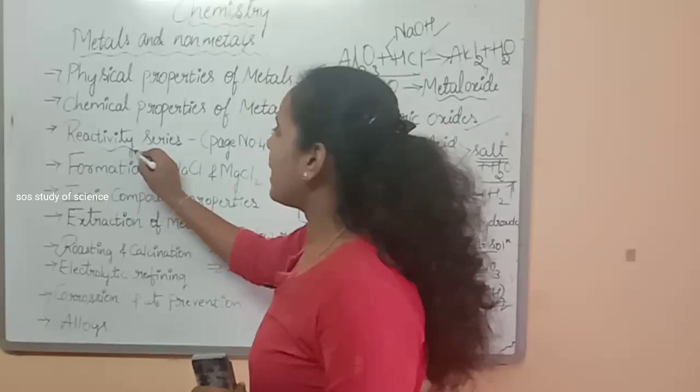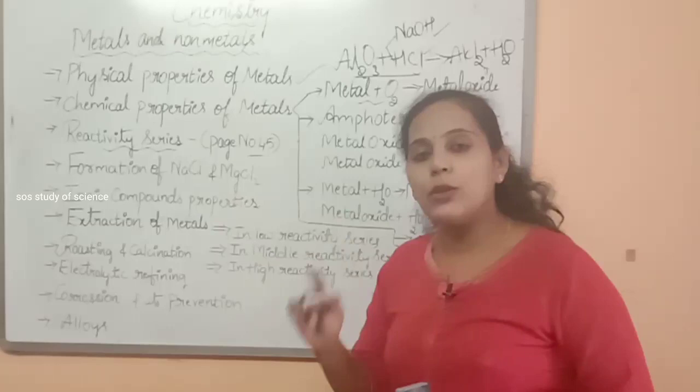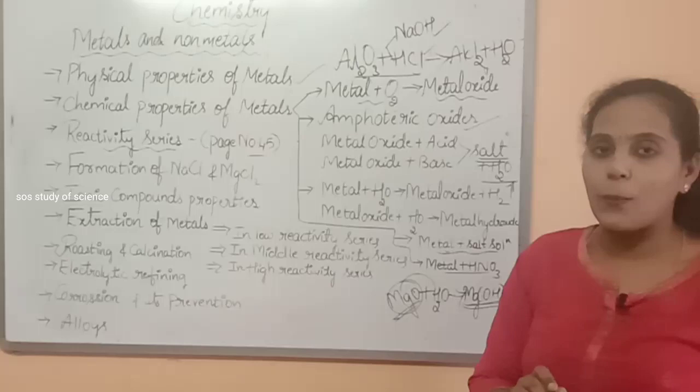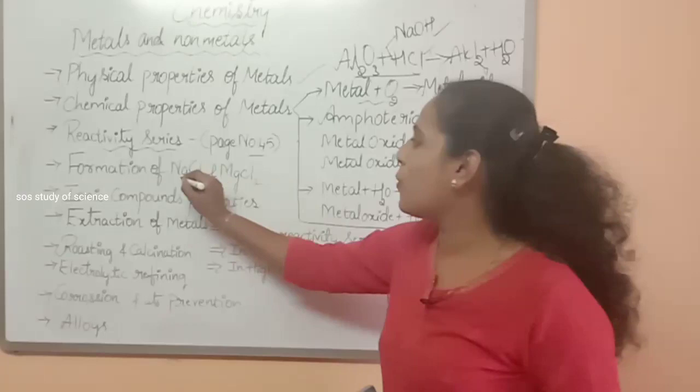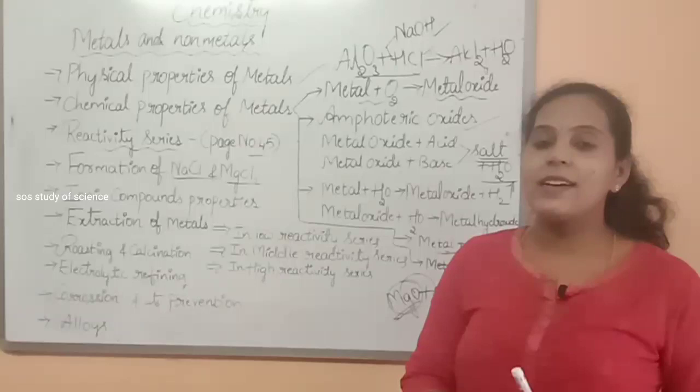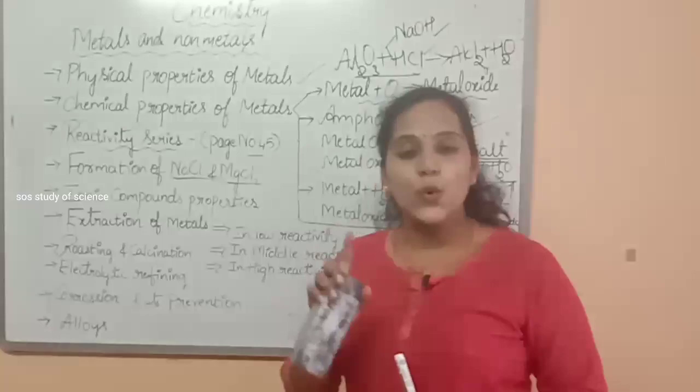Moving on, you also have to learn about the reactivity series given on page number 45 — high reactivity, medium reactivity, and low reactivity series. You must know these. And a very important concept: the formation of sodium chloride as well as magnesium chloride. Every examination has three to four marks on the formation of sodium chloride or magnesium chloride. You must learn both formations along with their electron dot structure.